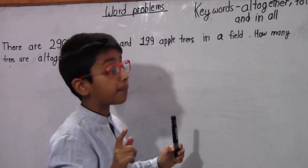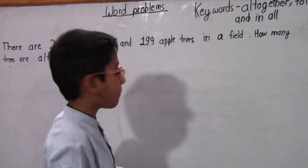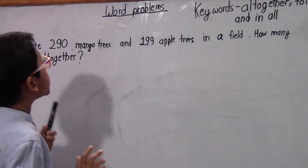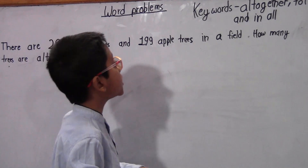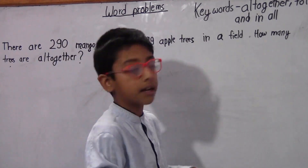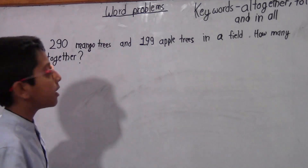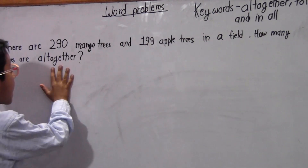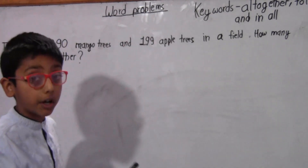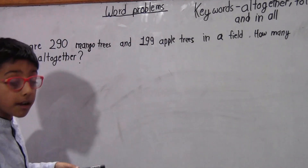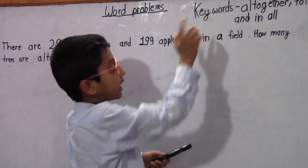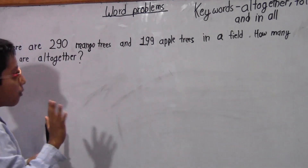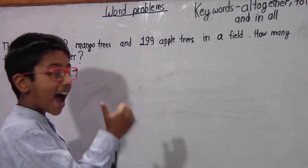If these keywords come, just like in this question: there are 290 mango trees and 199 apple trees in a field. How many trees are altogether? In the keywords, you can see 'altogether.' There is 'altogether' in this question, which means this is the keyword of word problem addition. So what should we do? We need to add.